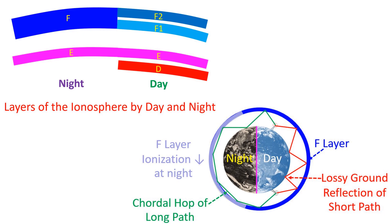When the signal reaches the daytime region, it is reflected back to the earth. This enables very long distance communications at remarkable signal strength, as the reflections through the ionosphere are less lossy than ground reflections.